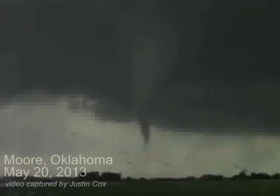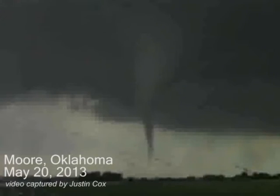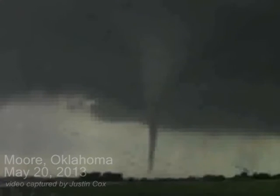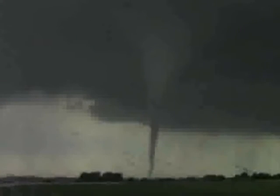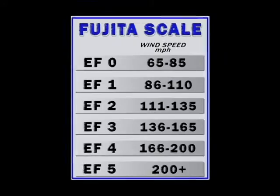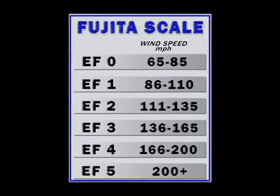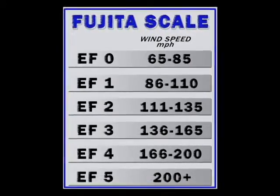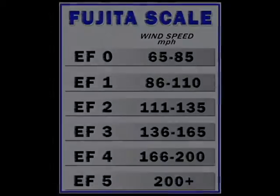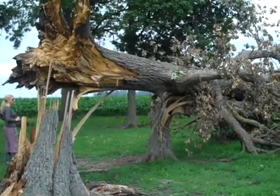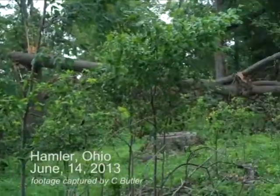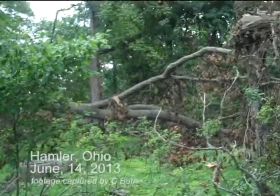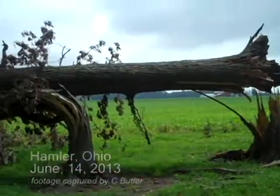Much like a skater spins faster when arms are pulled close to the body, a funnel cloud is created. Tornado experts and damage surveyors base their wind speed estimates on the damage caused by the tornado. An EF0 tornado is strong enough to damage trees but not substantial structures.